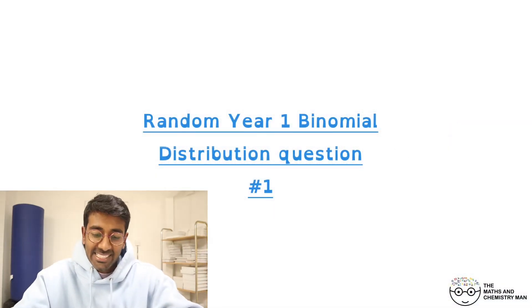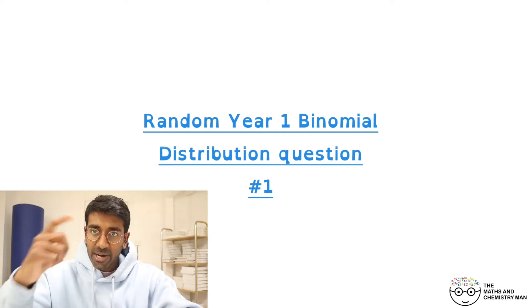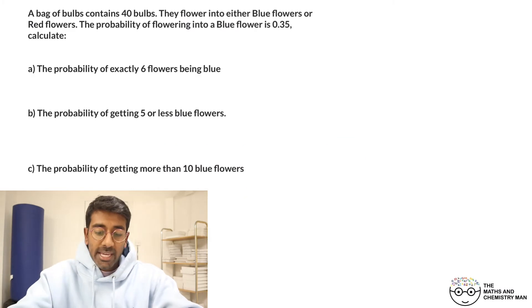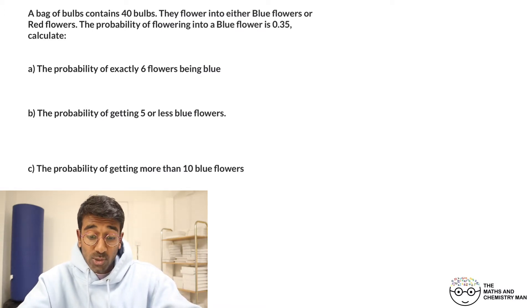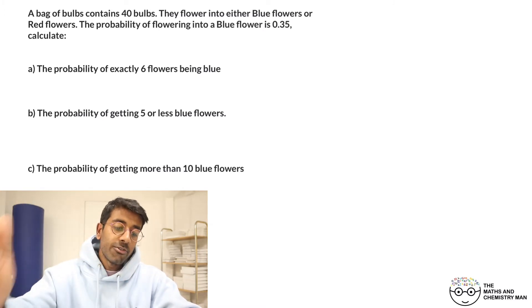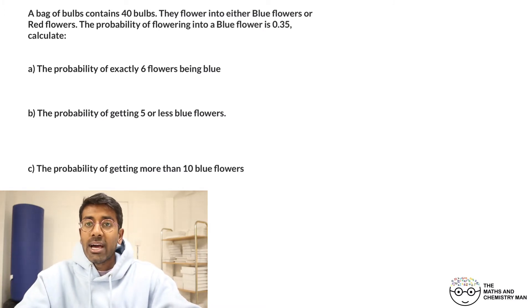Okay, we're back and today we've got a question on the binomial distribution. We've got a bag of bulbs which has 40 bulbs, and these bulbs are going to flower into blue or red flowers. The probability of flowering into a blue flower is 0.35, and what you need to do is calculate a few different things. Have a quick read through it.